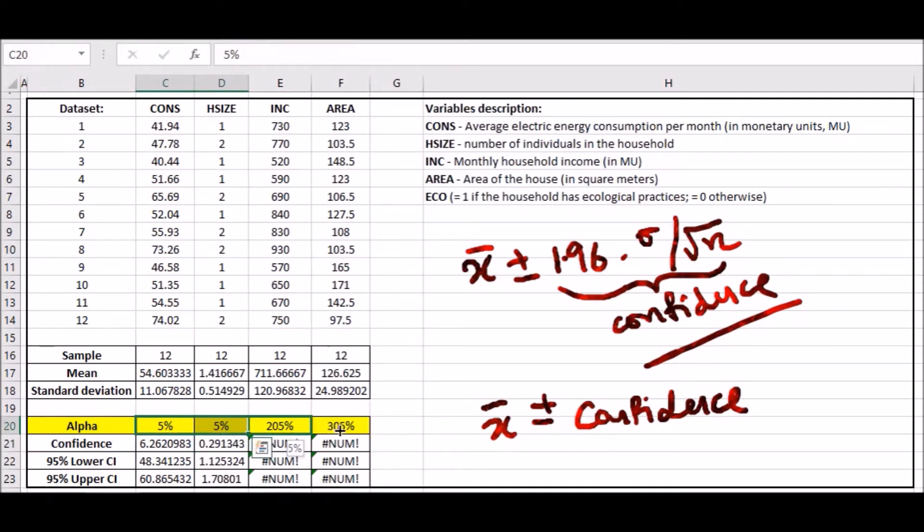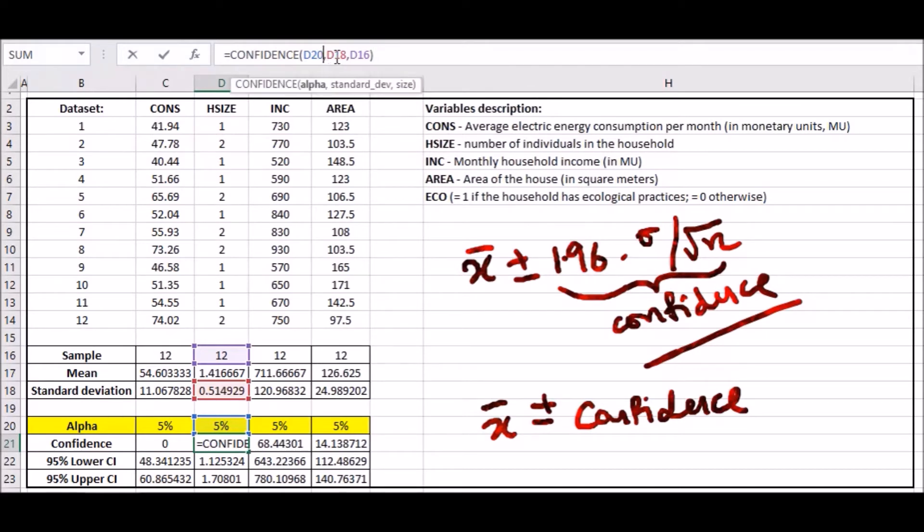Let's check the formulas. 5%, standard deviation, size—yes. And now we drag properly again.